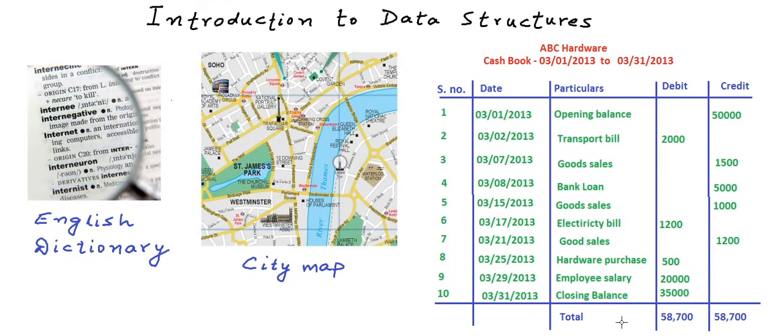Now computers work with all kinds of data. Computers work with text, images, videos, relational data, geospatial data, and pretty much any kind of data that we have on this planet.